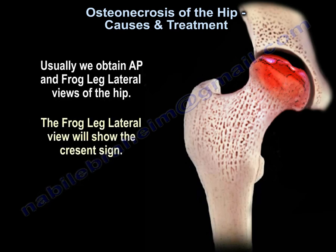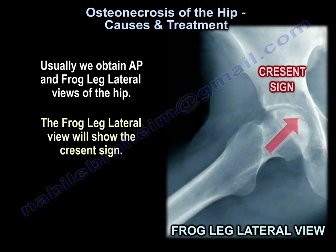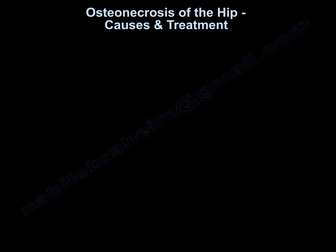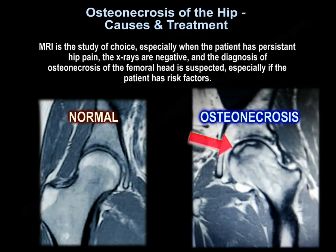Usually, we obtain AP and frog lateral views of the hip. The frog lateral view will show the crescent sign. MRI is the study of choice, especially when the patient has persistent hip pain, the x-rays are negative, and the diagnosis of avascular necrosis of the femoral head is suspected, especially if the patient has risk factors.